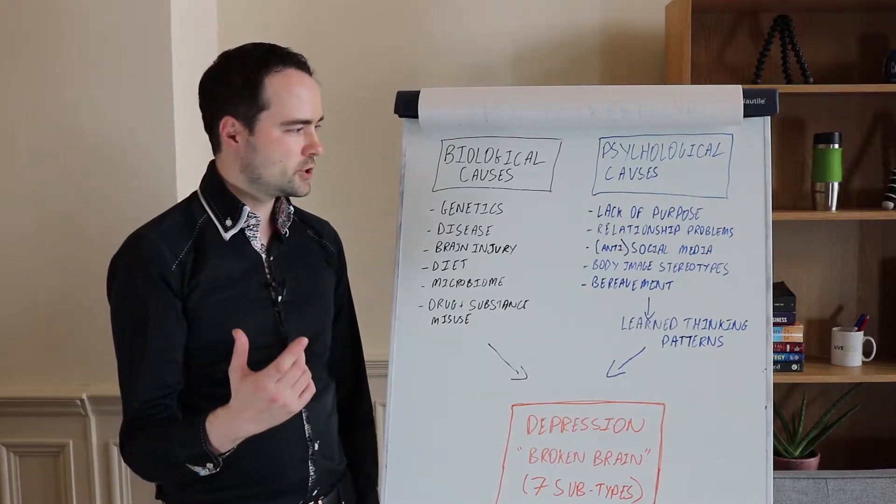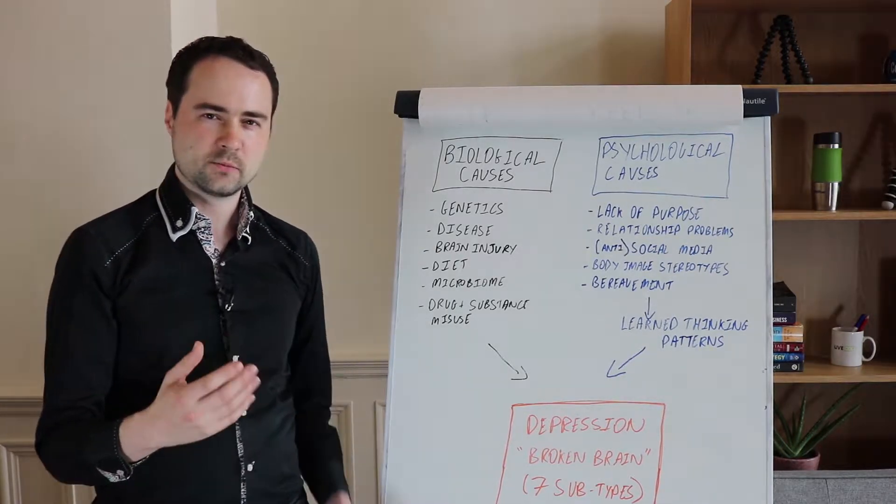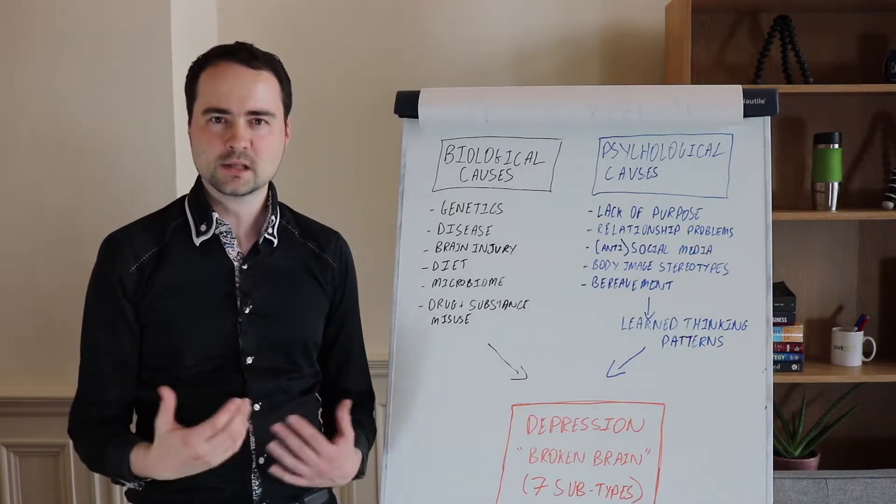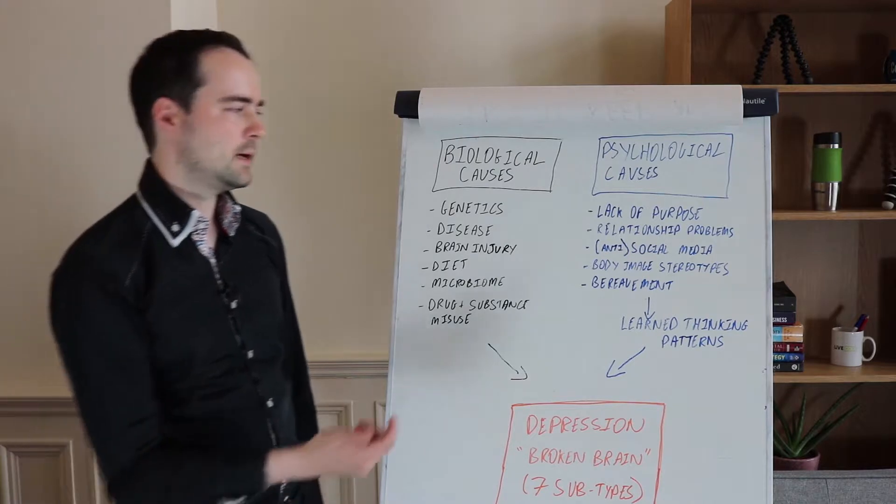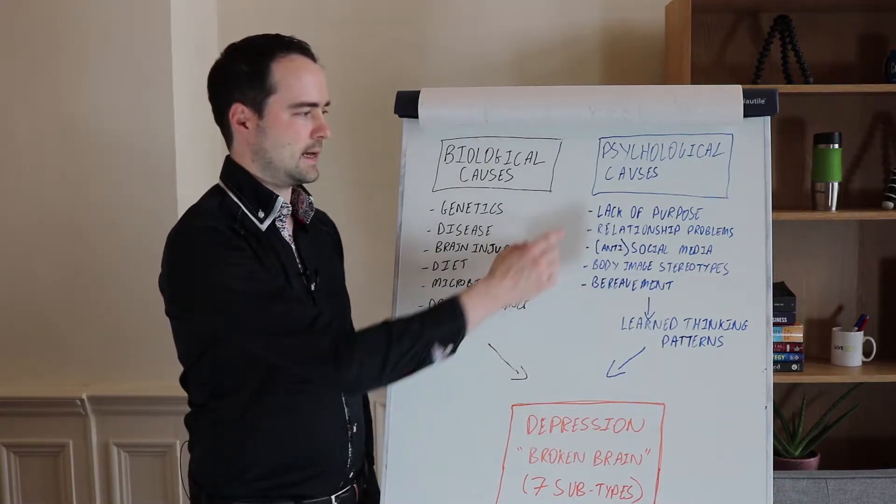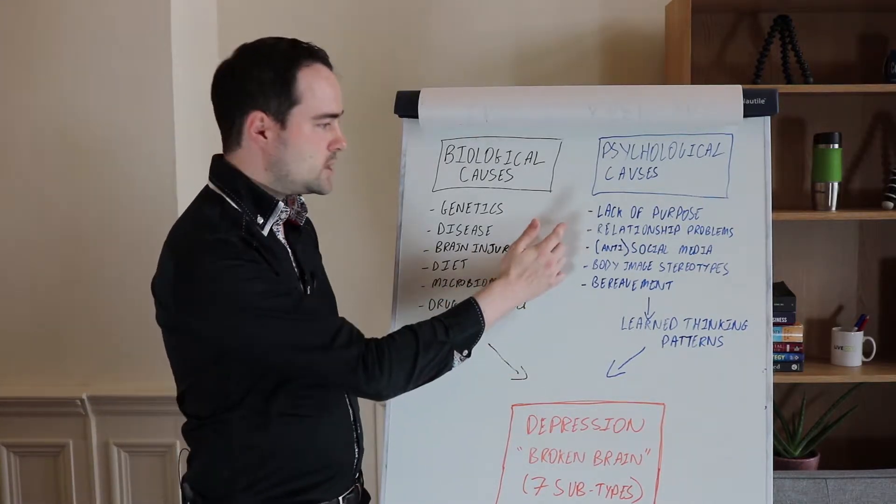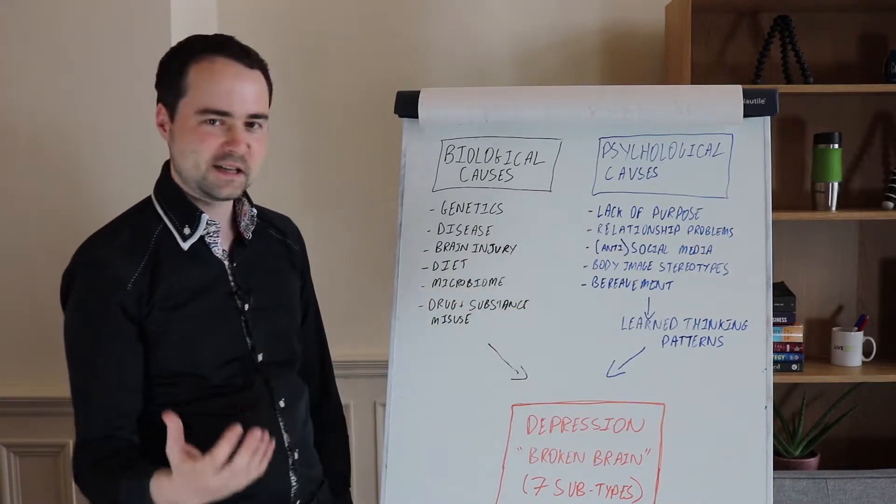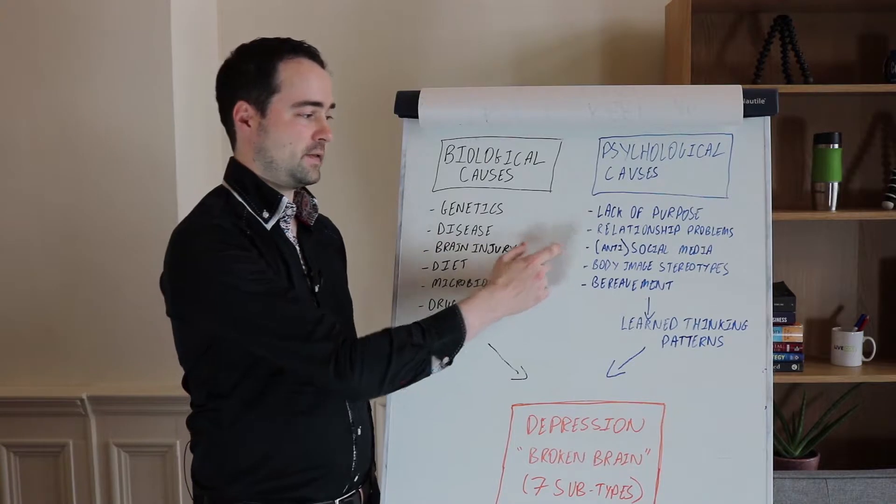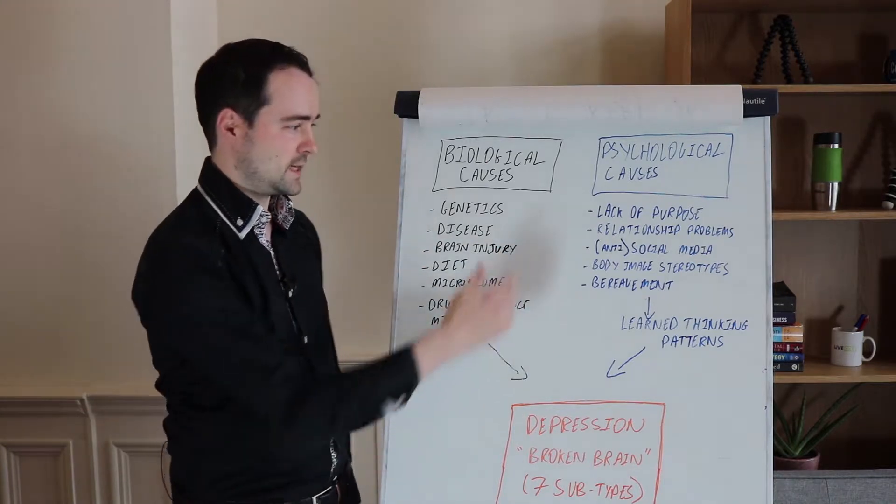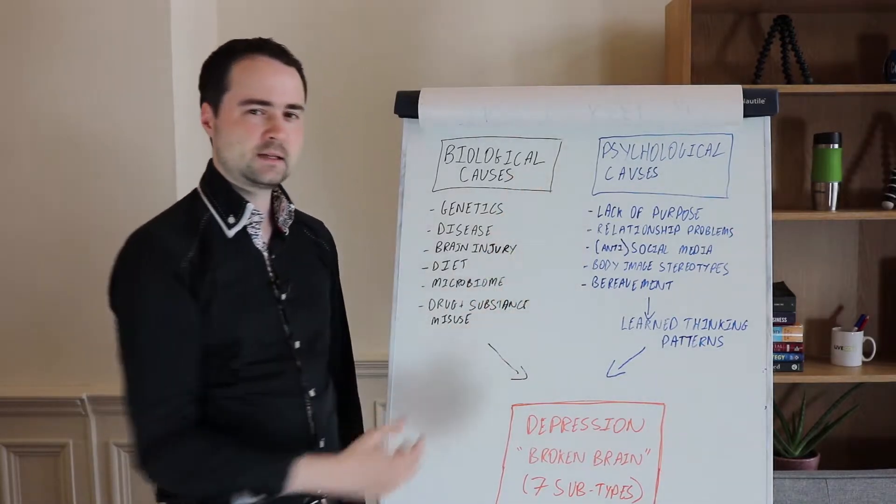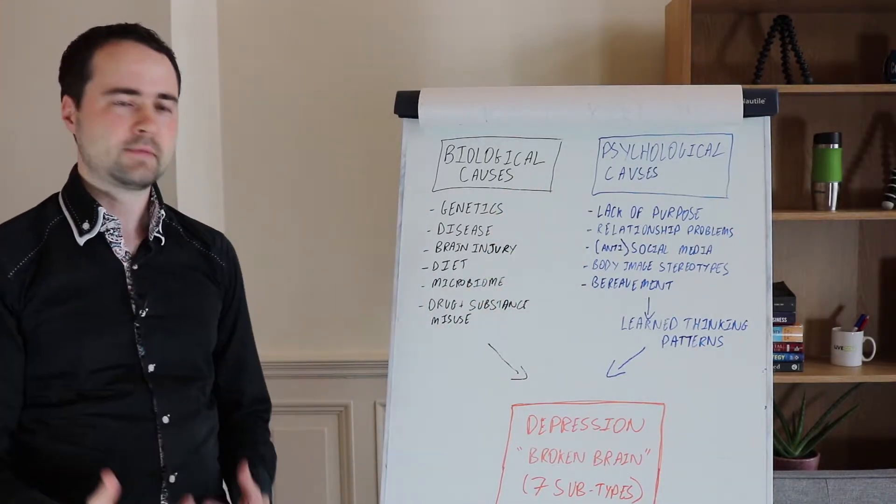On the psychological side, there are all kinds of things. The modern world is filled with challenges that make it hard for us to lead really stable positive emotional lives all of the time. These can be things like lack of purpose, relationship problems, anti-social media as I quite often like to call it. A lot of things around body image stereotypes that's maybe linked to social media. Bereavement or other external events that can come and can have that kind of impact.